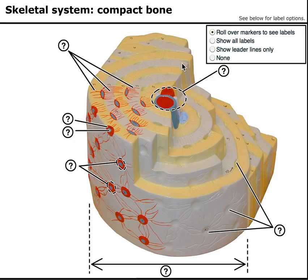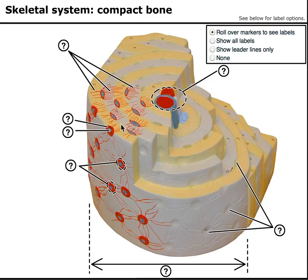Basically you have the concentric lamellae — these circles within a circle, which is what concentric means. Lamellae means plates, so these are actually hard bony plates that are in circles within circles, so the name should make some sense. They're indicated by the number five right here. That's what makes up a single osteon.